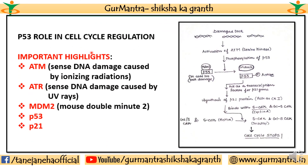Here I have highlighted p53's specific role in cell cycle regulation. Damaged DNA — whether single-strand or double-strand — triggers the DNA damage response, or DDR pathway. Two main enzymes work here: ATM and ATR. If there is DNA damage, these enzymes activate, and ultimately p53 — which is otherwise held inactive — becomes active. The regulating factor is MDM2, which normally keeps p53 inactive by binding to it.